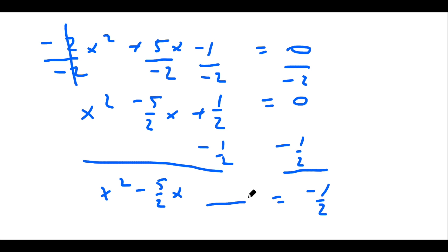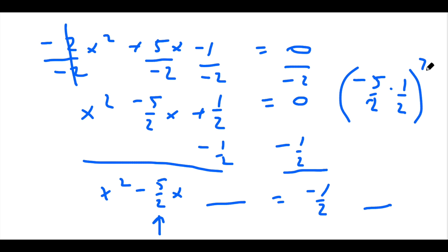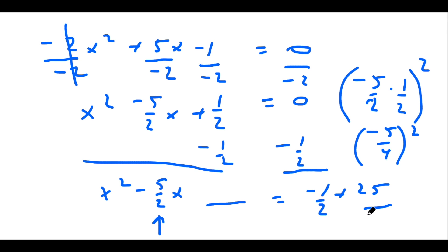So here's the completing the square part. What we want to do is take half of negative 5 over 2 and square it. When you take half of something, you can divide it by 2 or multiply it by 1 half. So in this case, this comes out to negative 5 fourths squared, which is 25 sixteenths. So we're going to add 25 sixteenths to the right side of the equation and add 25 sixteenths to the left side to keep it balanced.